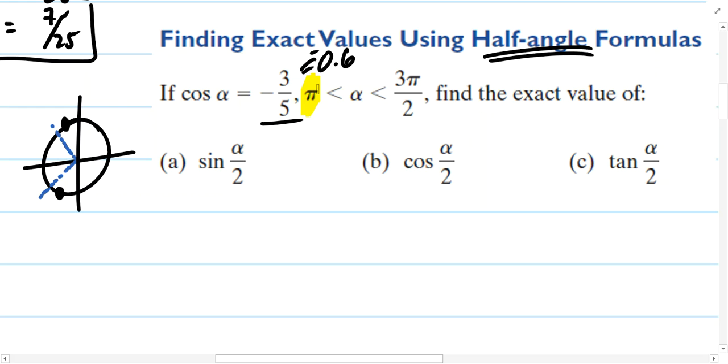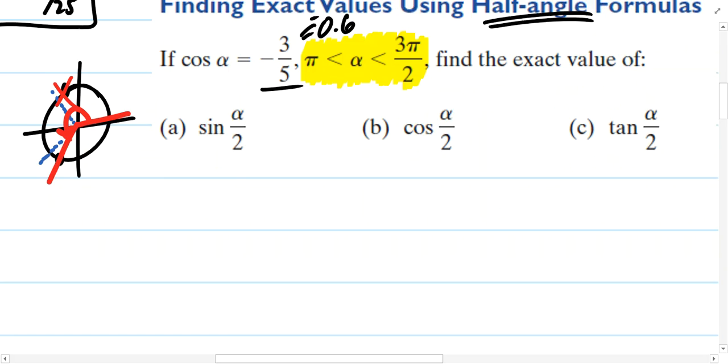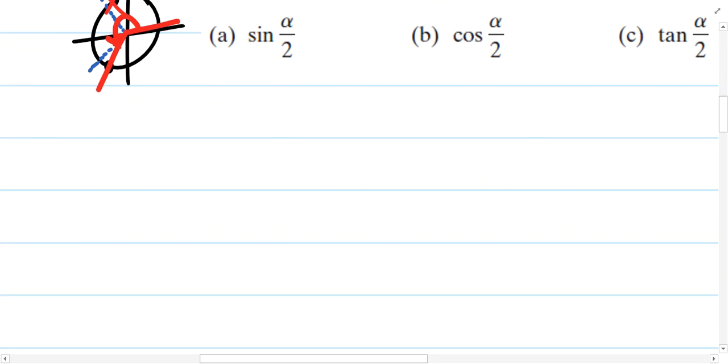These are the two x values in question, and we're also told that alpha, the angle measure, must exist somewhere between π and 3π over 2. So that eliminates this angle, and that forces us to focus on this guy right here. We have an idea of the position inside of the unit circle.